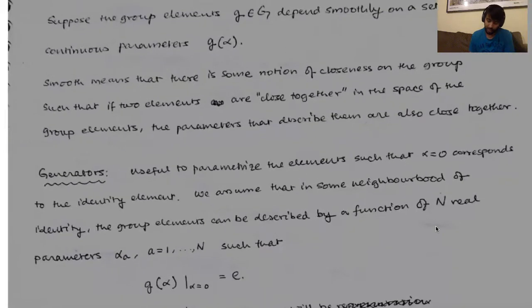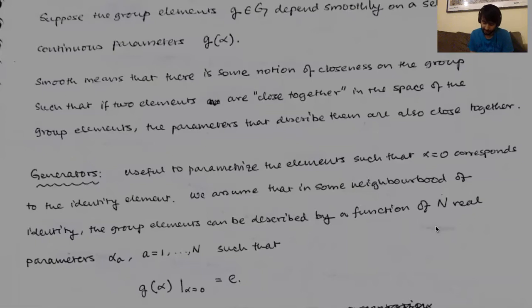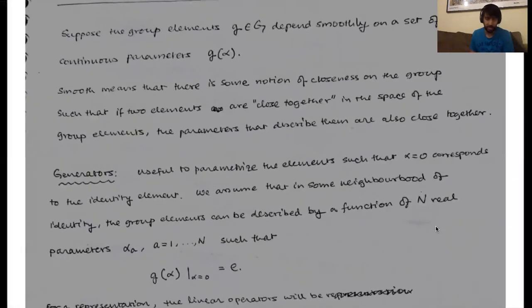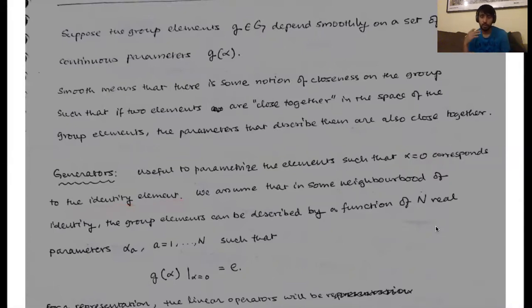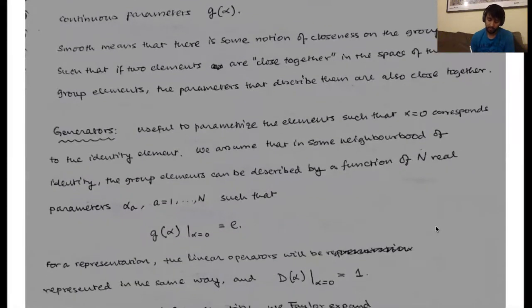What we will find very useful is this concept of generators. This is going to be very central to how we are going to approach this. It's going to be useful to parameterize these particular elements such that when alpha equals zero, this corresponds to the identity element. So let's suppose we are in some neighborhood of the identity. The group can be described in terms of n real parameters alpha_a where a runs from one to n, and when we put all of these equal to zero, then G(alpha) equals E.